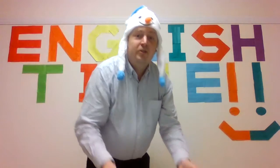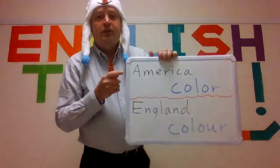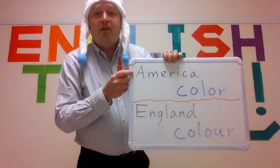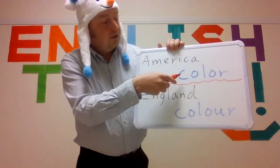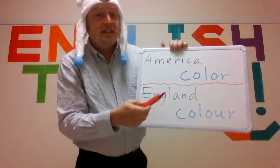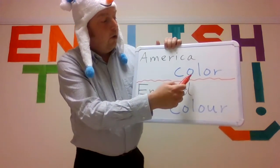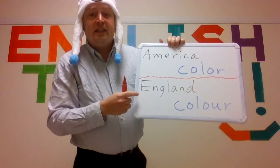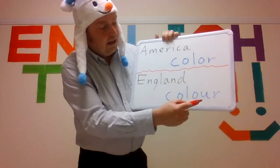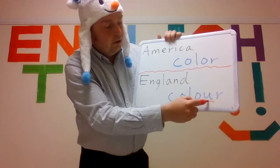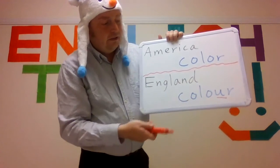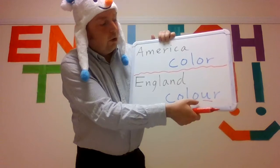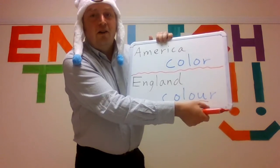There are some other words that America and England spell differently. For America, color is C, O, L, O, R. But in England they add a U, so they spell it C, O, L, O, U, R.